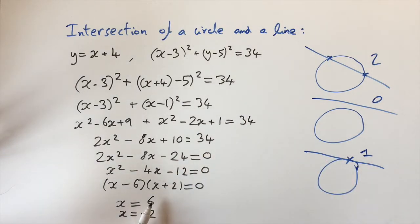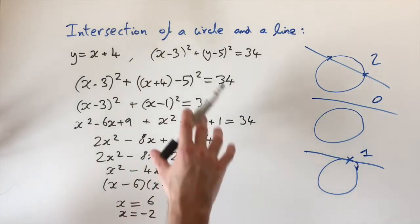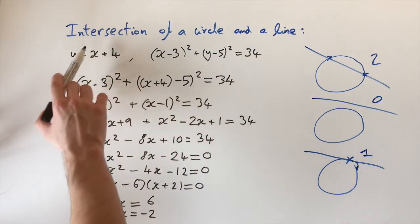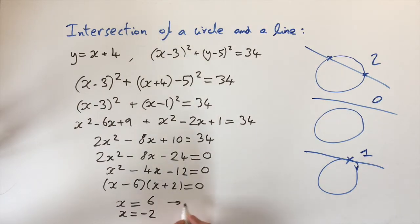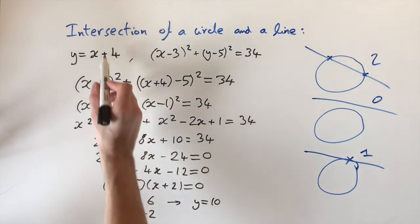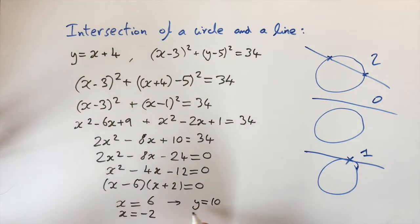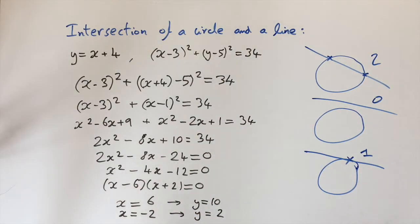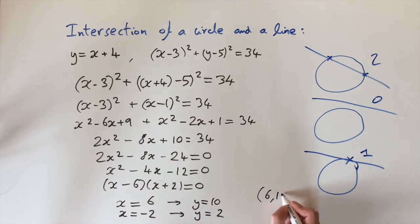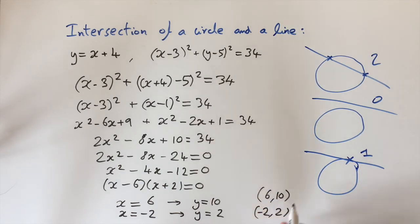We also want the corresponding y values. We substitute back into the line equation, which is much easier. Putting x equals 6 in gives y equals 10, and putting x equals minus 2 in gives y equals 2. So the coordinates of the two places of intersection are (6, 10) and (−2, 2).